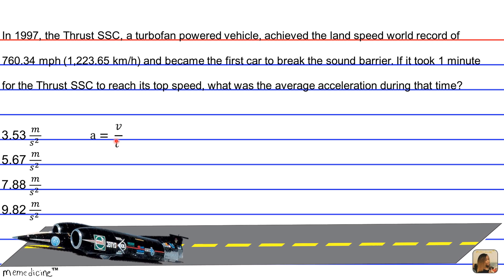So remember that these units are given in meters per second, but we're given a velocity in kilometers per hour. So we're going to have to do a dimensional conversion.